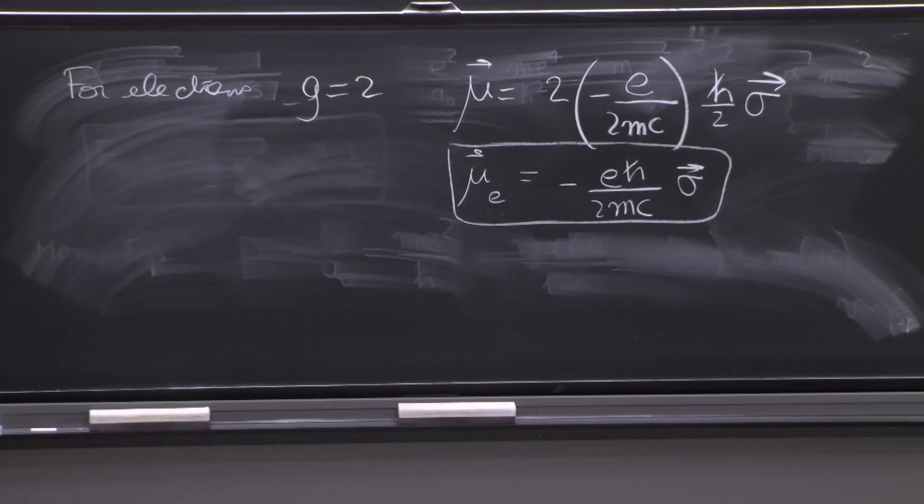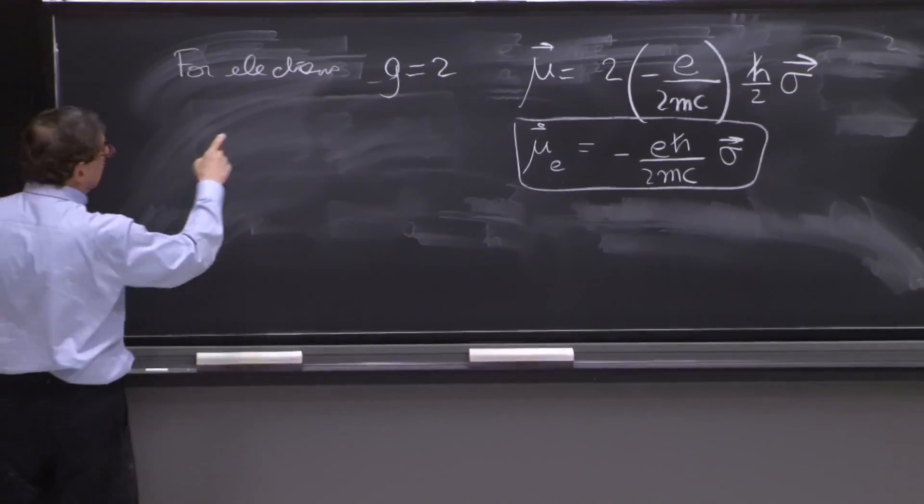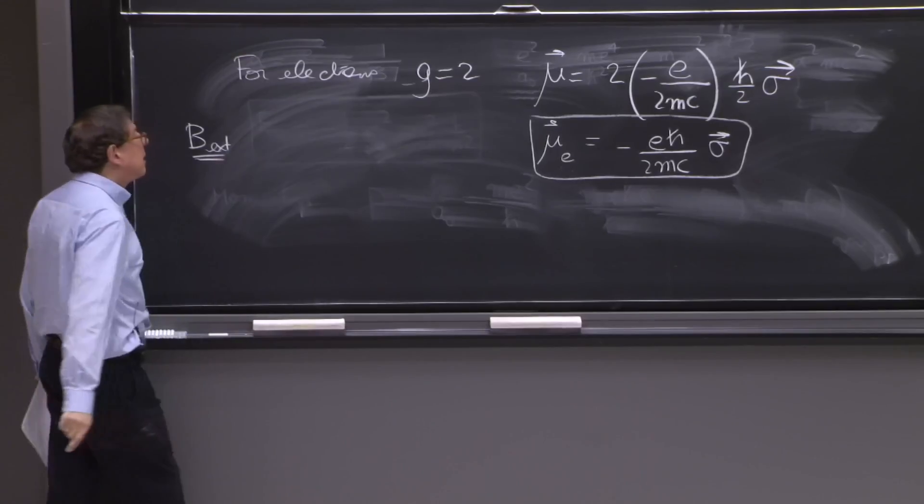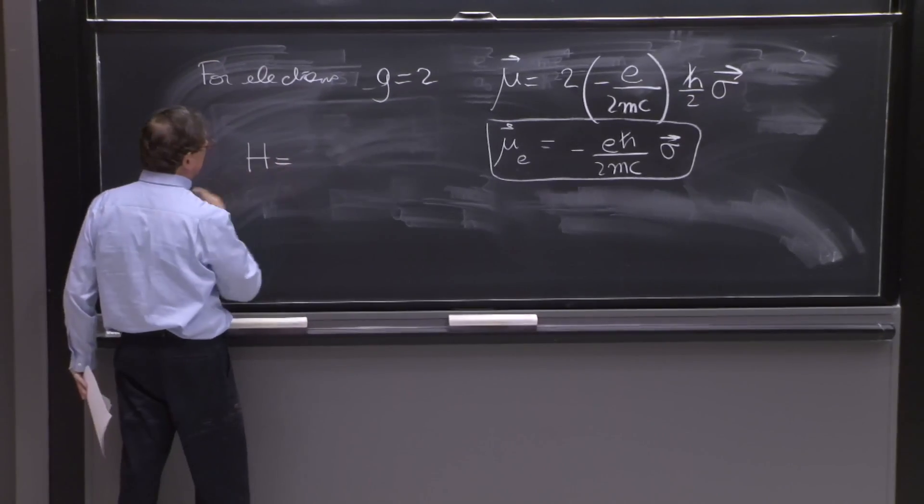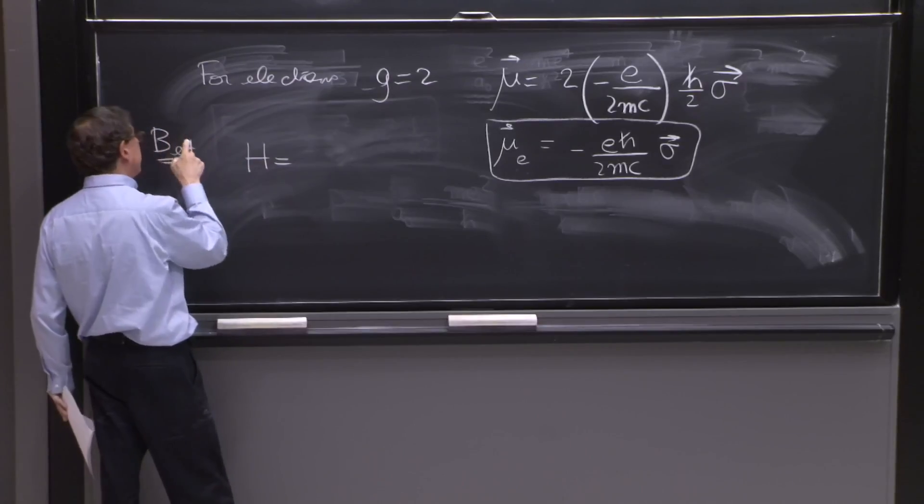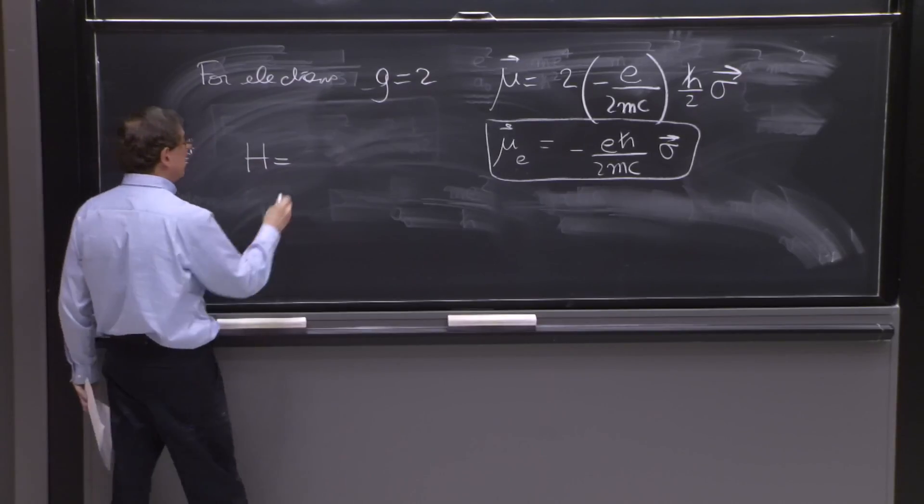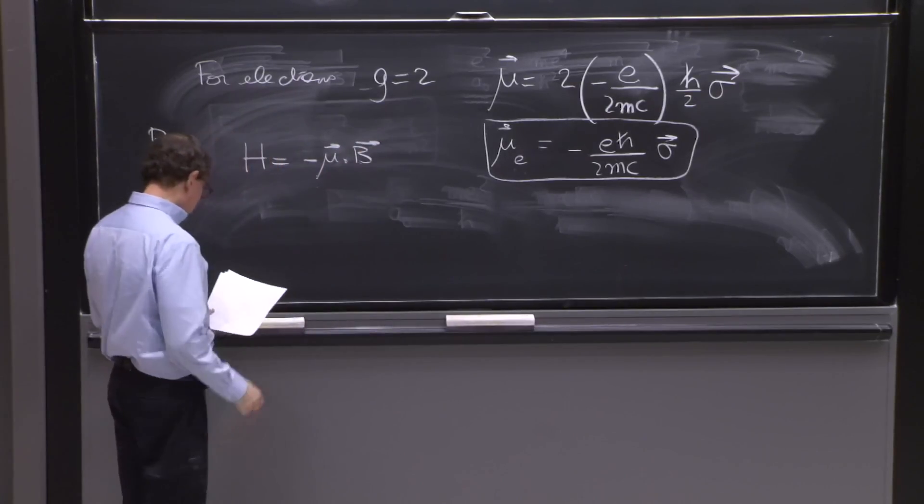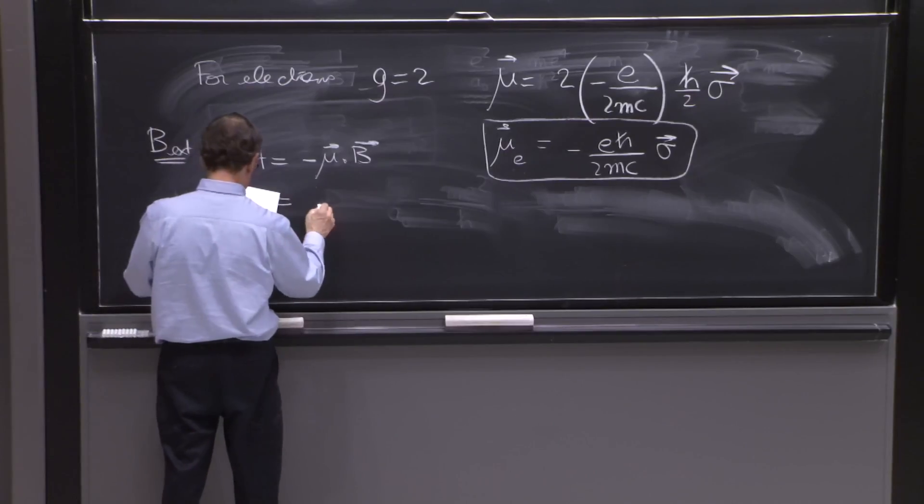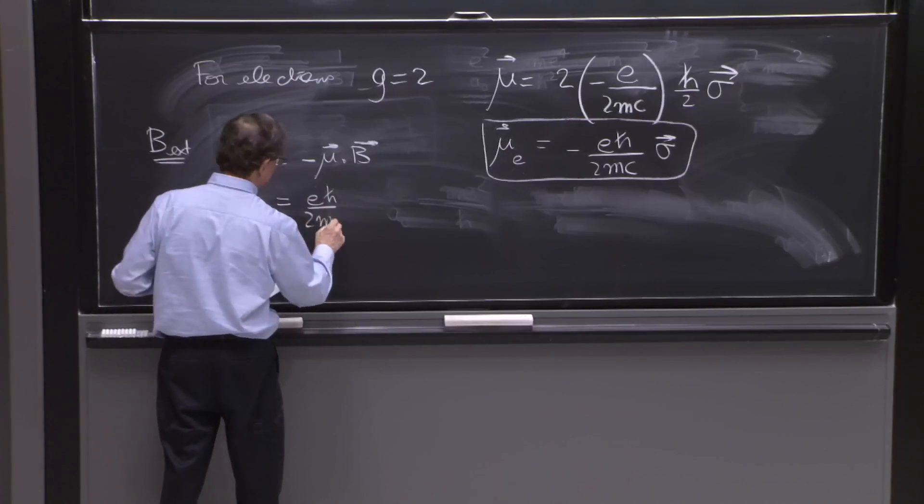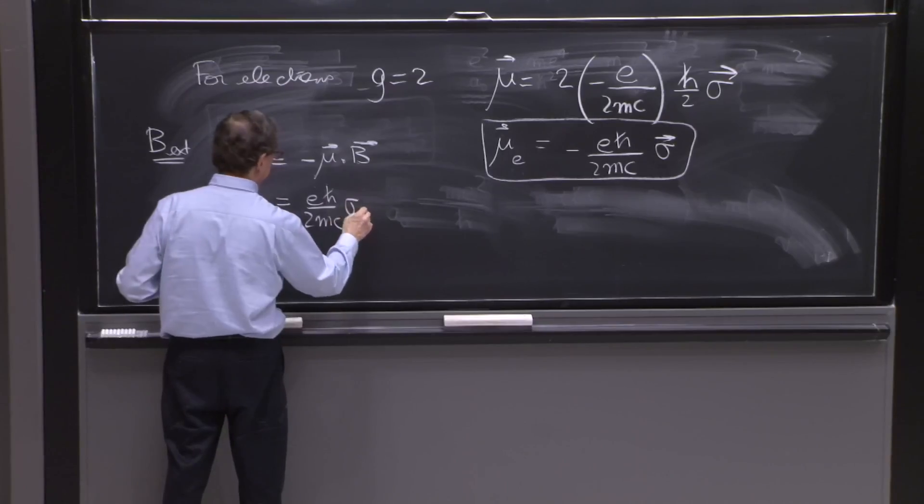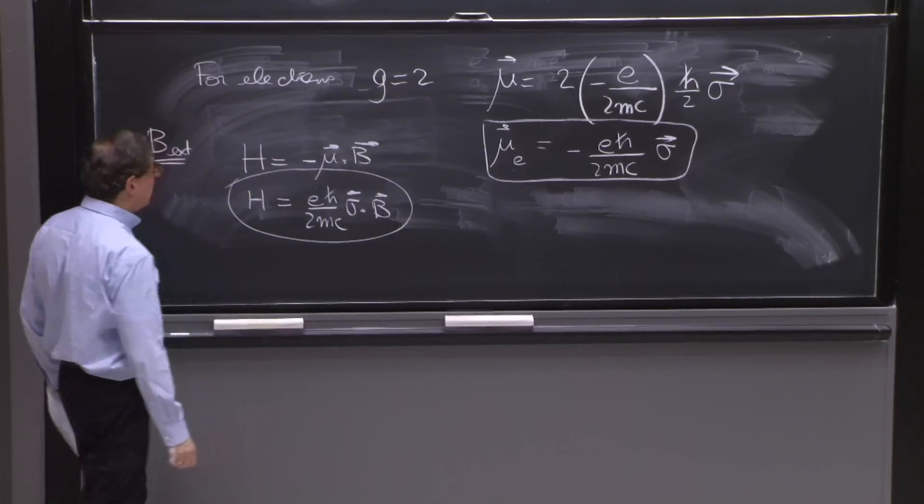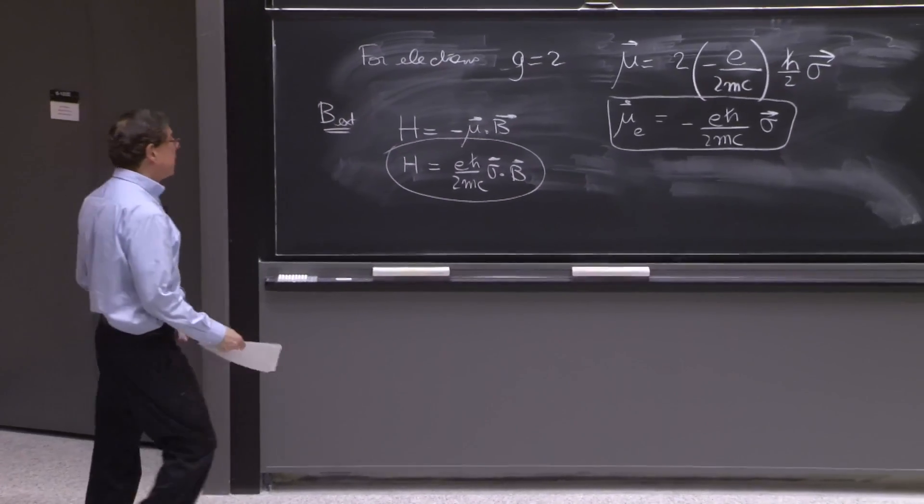So if you have a magnetic field, a B external, the Hamiltonian that includes the energetics of the magnetic field interacting with the dipole moment is always minus mu dot B. So in this case, it would be e h bar over 2mc sigma dot B. That's a Hamiltonian for an electron in a magnetic field. Something you've used many, many times.